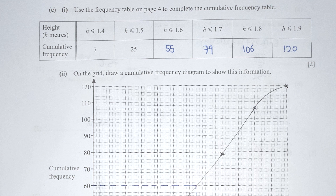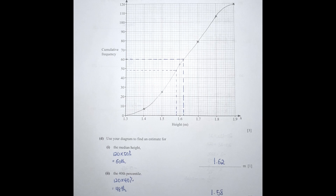For section C, cumulative frequency: 55 is obtained by taking 25 plus 30; 79 is 55 plus 24; 106 is 79 plus 27; and the last is 120. I roughly illustrated the cumulative frequency diagram — it's slightly inaccurate between 1.6 and 1.7. To calculate the median height, I took 120 times 50% to get 60, then traced back from 60 on the cumulative frequency to the height axis, giving approximately 1.62 meters.